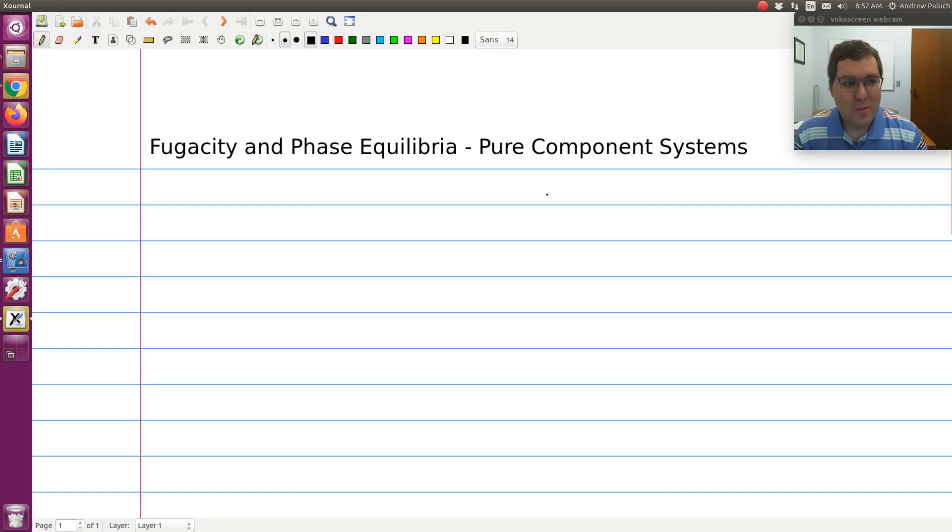All right, hello. So in Chapter 7, our focus is on the theory of phase equilibria in pure component systems, more specifically, the theory of vapor-liquid coexistence in pure component systems.